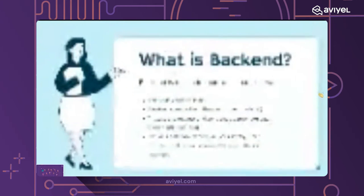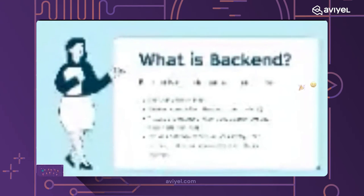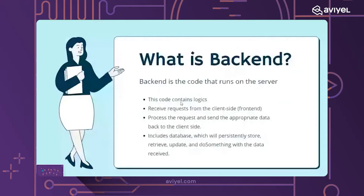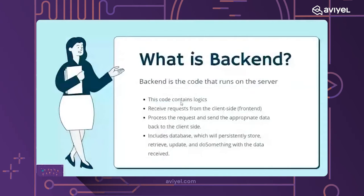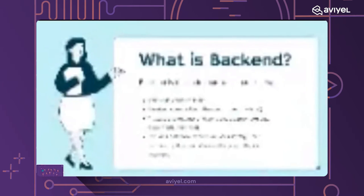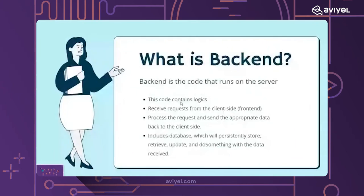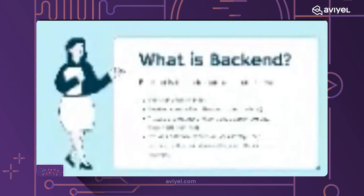This code contains logic — functions that we write in JavaScript, Python, etc. The backend contains logic, and this logic receives requests from the client side, which is the front end. We have a front end communicating to the backend, and the logic in the backend is going to process and retrieve requests from the front end.